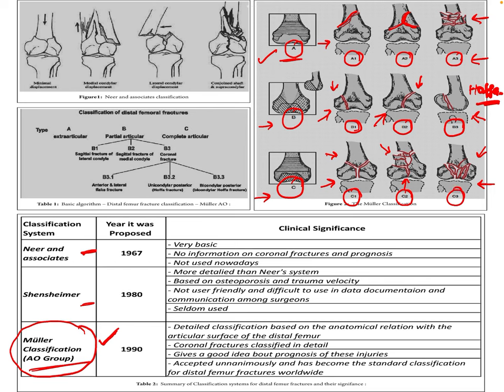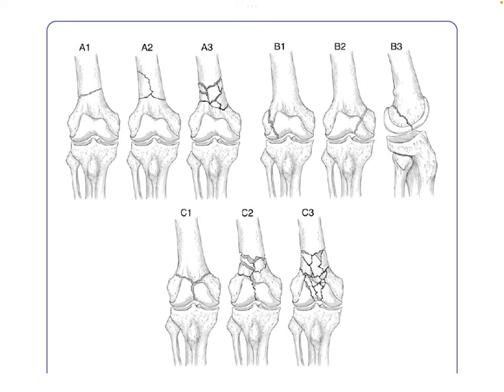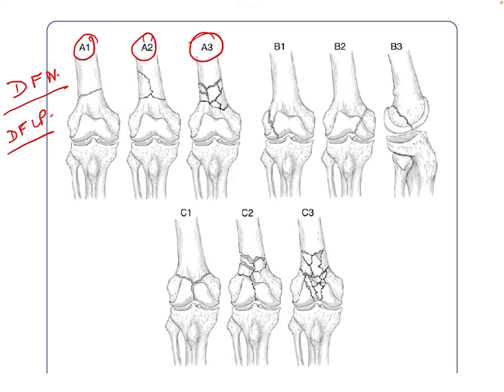This AO Müller classification for distal femur fractures also dictates the type of intervention required. For Type A fractures — A1, A2, and A3 — we have two options: a distal femoral nail or a distal femoral locking plate, depending upon the expertise of the surgeon.